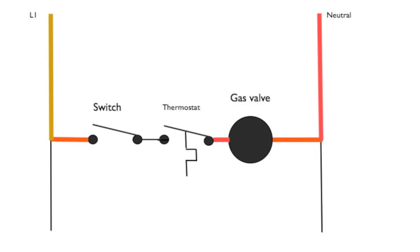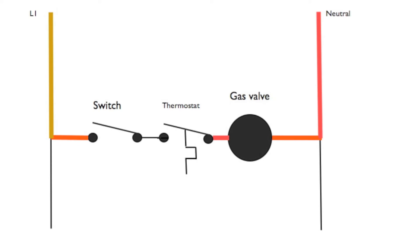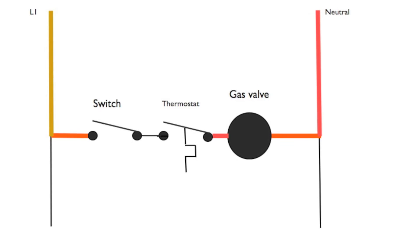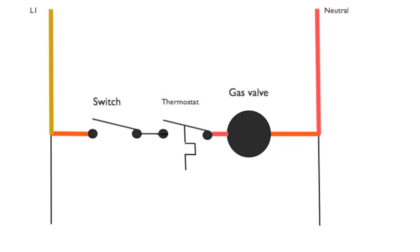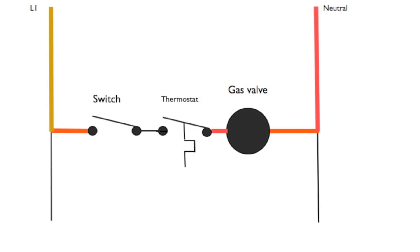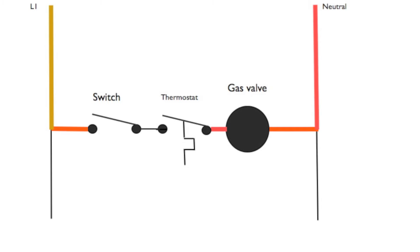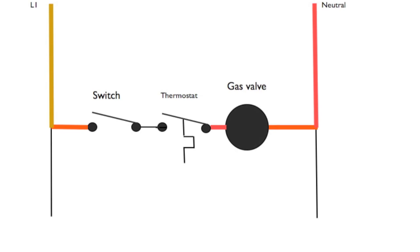With both switches open, you can see the power goes to the system switch on the left and goes through the gas valve, but it stops at the thermostat. Both of those switches have to be closed.